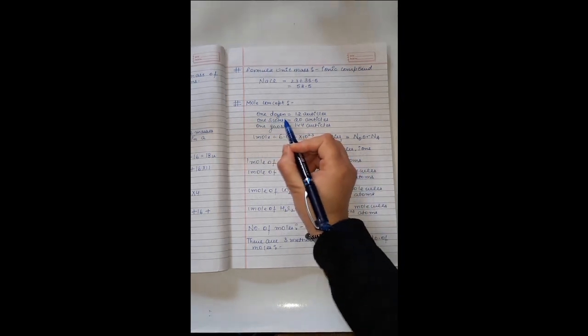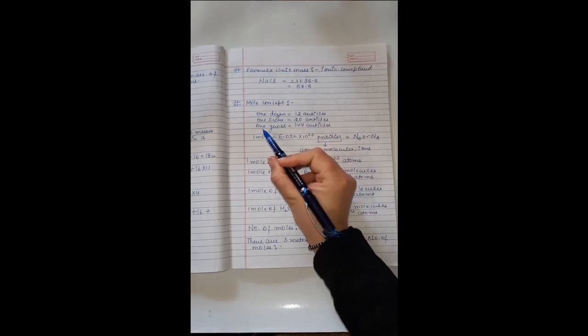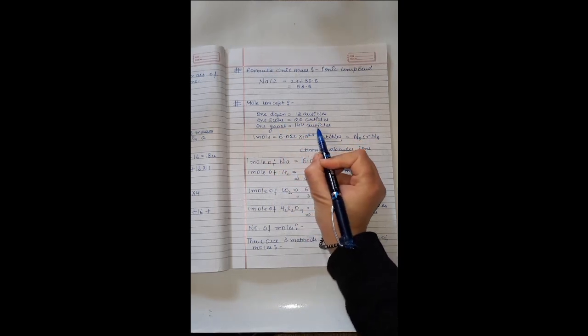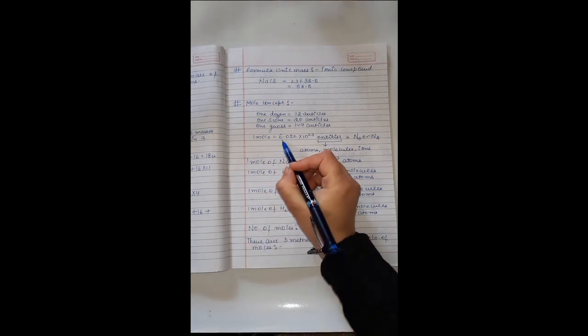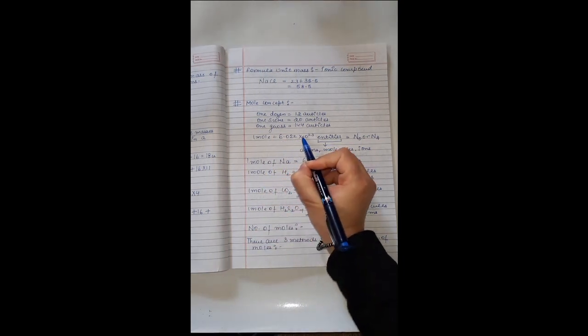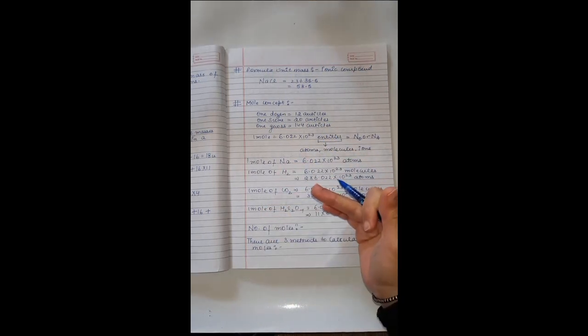Oswal said mole is nothing but a quantity, like one dozen, one score, and one gross. As we know, one dozen contains 12 articles, one score contains 20 articles, and one gross contains 144 articles. Like this, Oswal said one mole will contain 6.022 × 10²³ articles or entities. Entities can be atoms, molecules, or ions.